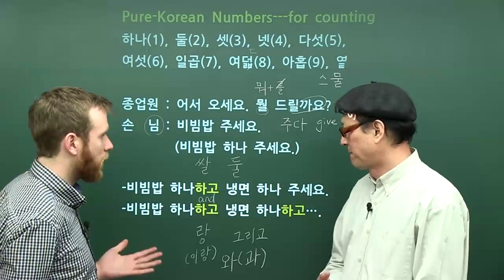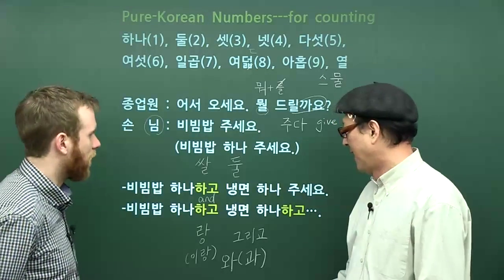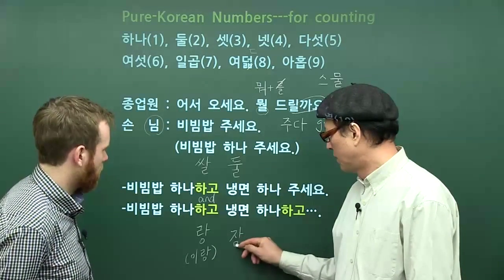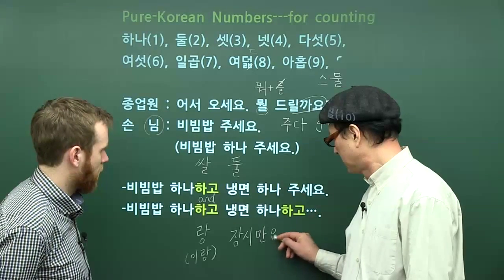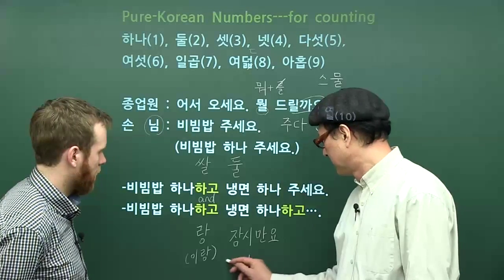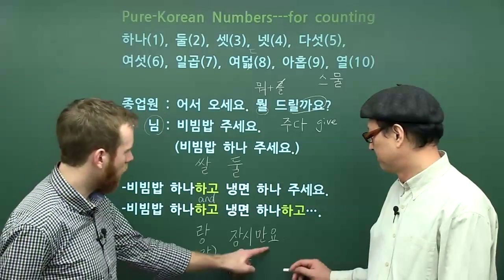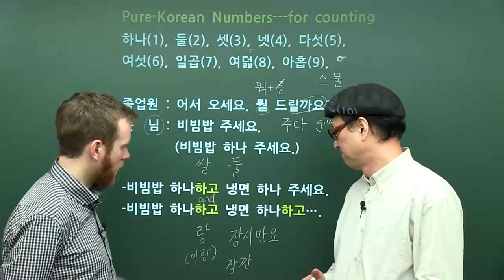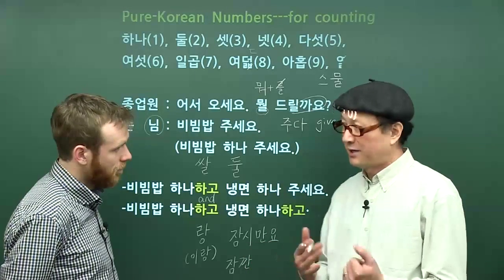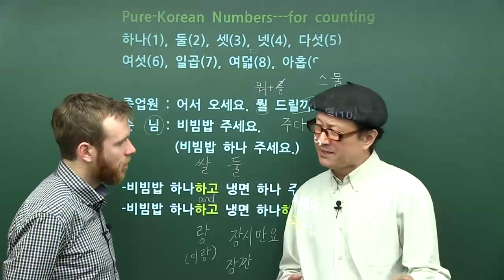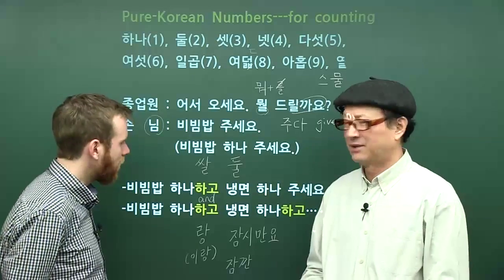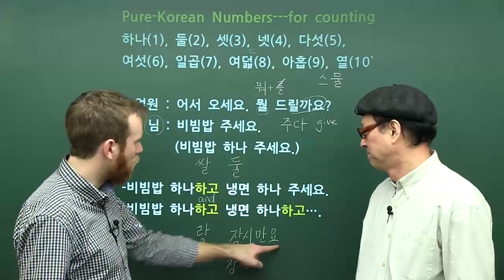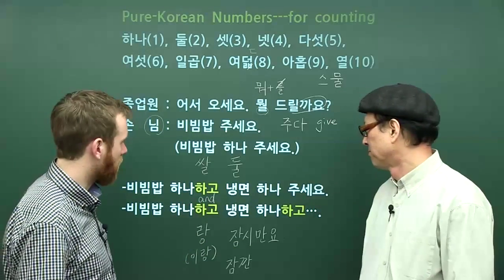If you need a moment to read the menu in a restaurant, you can say 잠깐만요 — please just give me a moment. Or 잠시만요. 잠시 and 잠깐 both mean 'a short time,' and 만 means 'just' or 'only.' You can also use 잠시만요 in the subway when you want to pass someone in front of you. 요, of course, is the polite ending we've seen in different lessons.